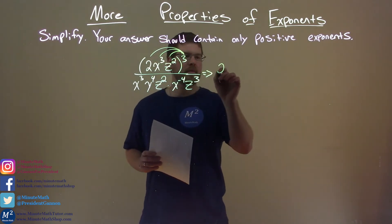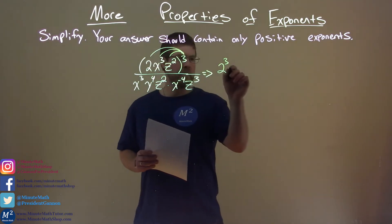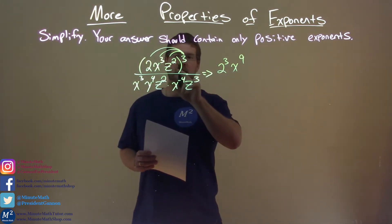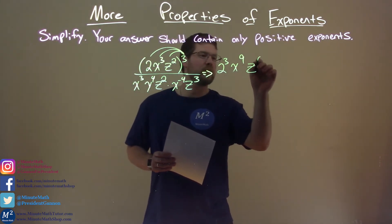We have 2 to the third power right there, then x to the third power to the third power, we multiply the exponents, 3 times 3 is 9. z squared to the third power, 2 times 3 is 6, and z to the sixth power.